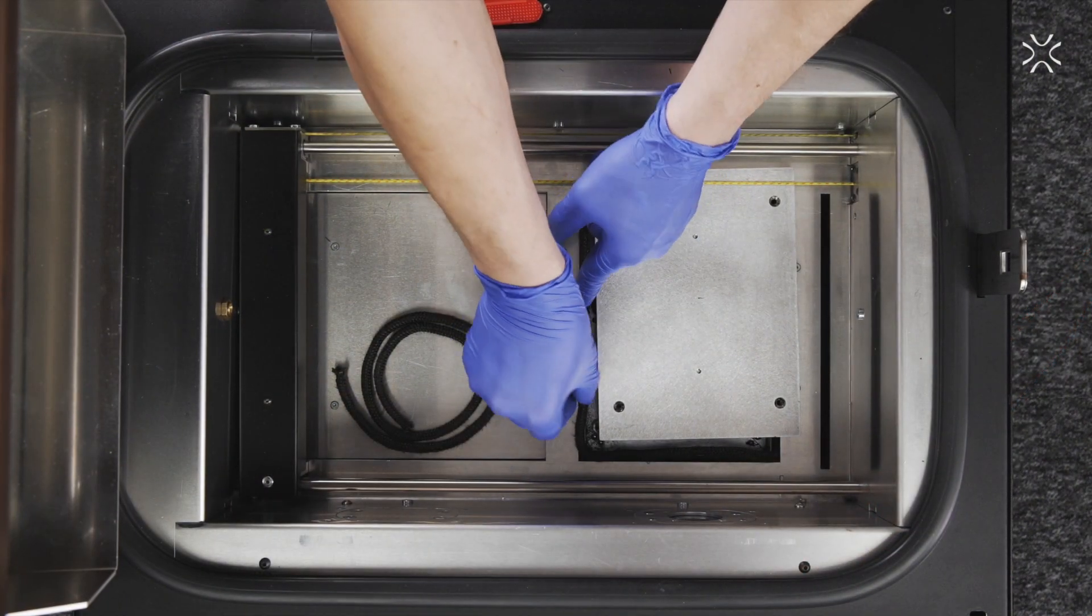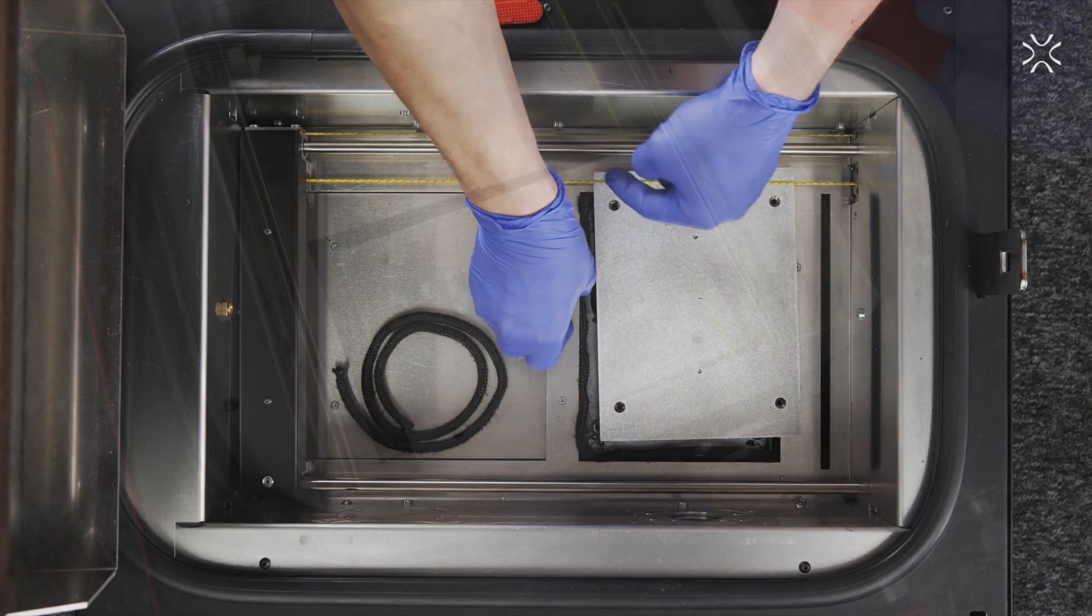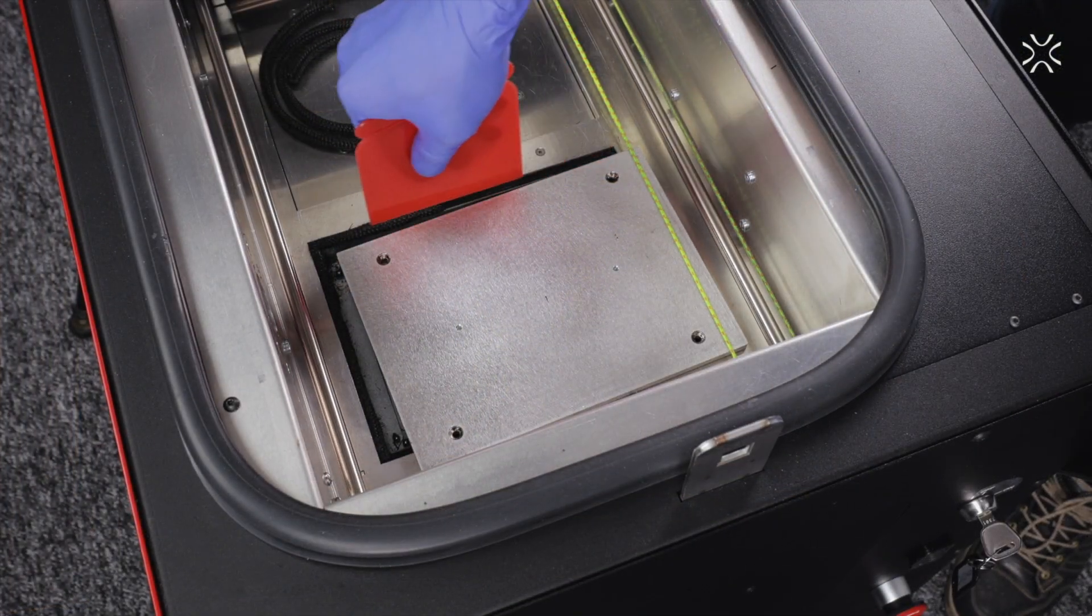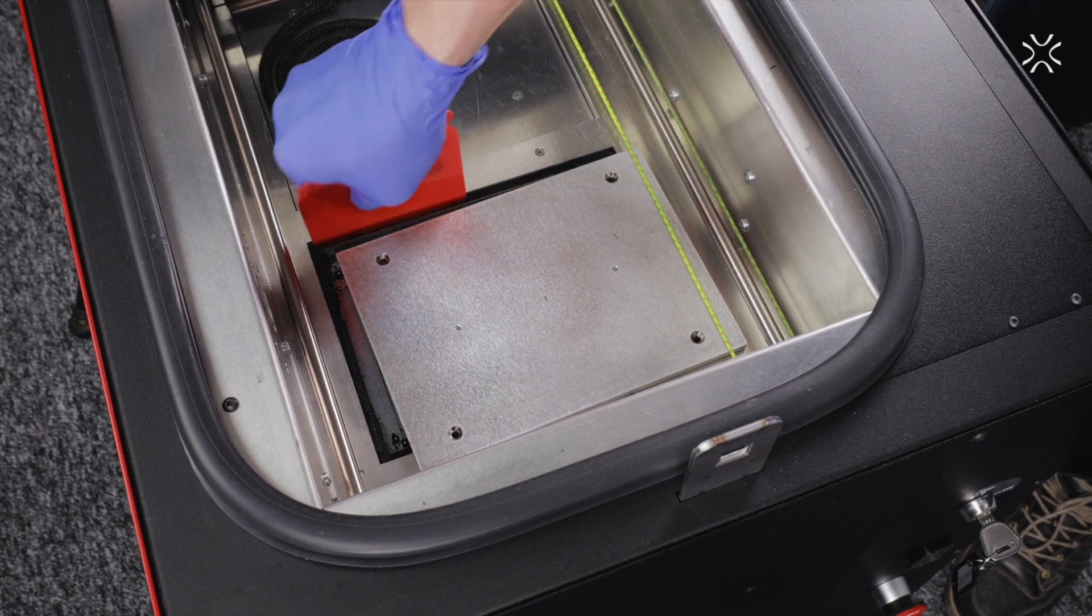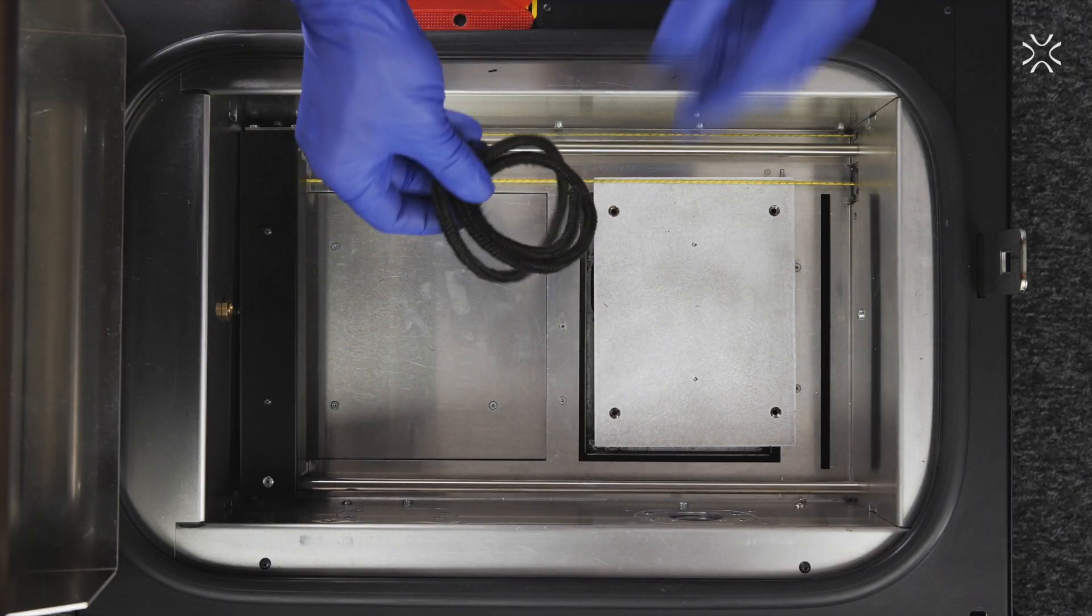Move the print bed's plate gently to get access to the other side. Repeat this process for the other ropes.